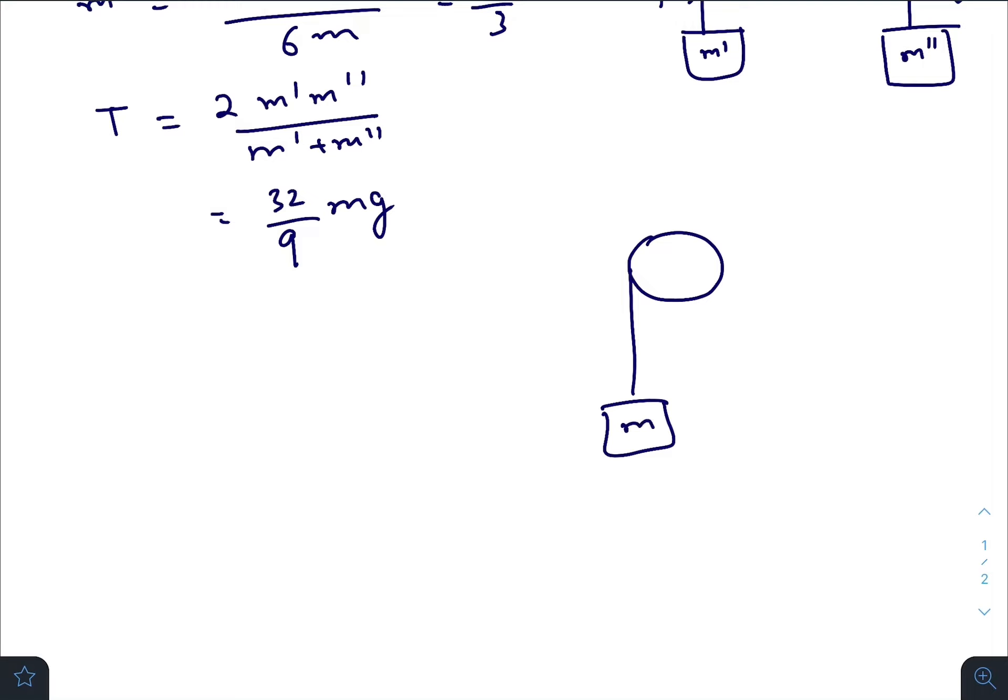So here it is m, here it is m, here it is 2m. Here tension is T, here it will be T by 2. mg, 2mg, 2mg, T by 2. So acceleration of A will be T by 2, that is 16 by 9mg minus mg